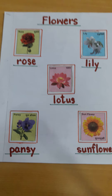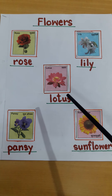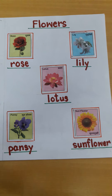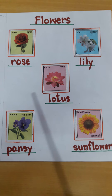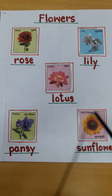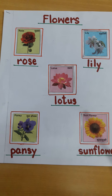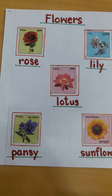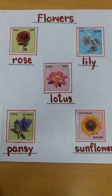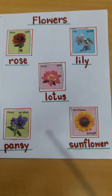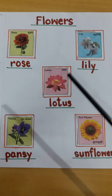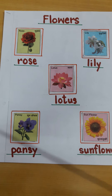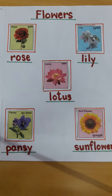Aap garden me kya dekhte hai? We see many flowers in the garden. Hum log apne garden me dheer saari phullo ko dekhte hai. Rang birangi phool. Aur us phool ko dekh ke hume bahut acha lagta hai, hum log khush ho jate hai phullo ko dekh kar.